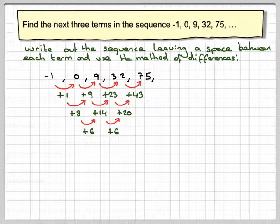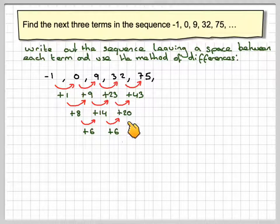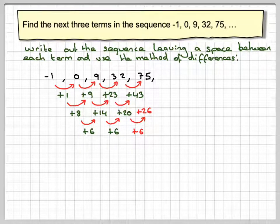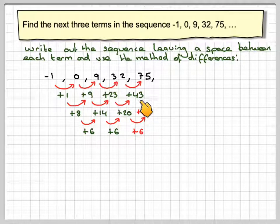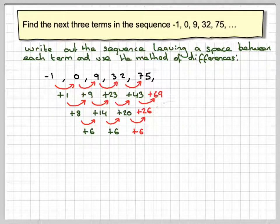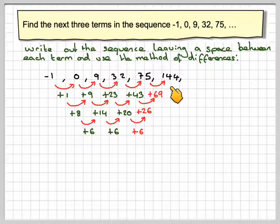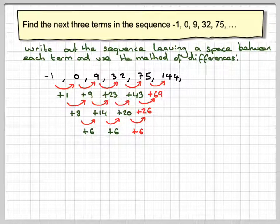Now we've got enough information in order to carry the pattern on because each time we are adding 6 here. So if we now add 6 to 20, we're going to get 26. And if we now add 43 plus 26, we get 69. And now if we do 75 plus 69, we're going to get 144. So that gives me the next term.